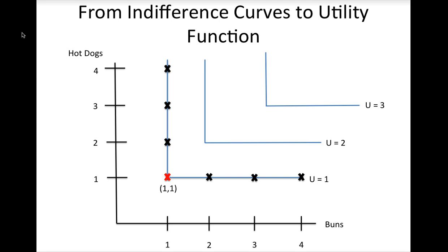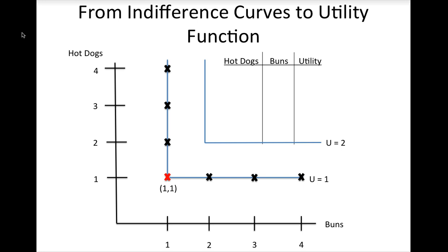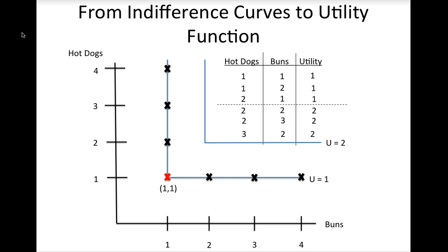For this example, we will focus on 2 indifference curves to identify the pattern. For indifference curves of this type, it is helpful to make a table tracking different combinations of hot dogs and buns and the utility from each bundle. If the consumer consumes 1 hot dog and 1 bun, his utility is 1. His utility is also 1 if he consumes 1 hot dog and 2 buns, or 2 hot dogs and 1 bun. If the consumer consumes 2 hot dogs and 2 buns, his utility is 2. If he consumes 2 hot dogs and 3 buns, or 3 hot dogs and 2 buns, his utility is still 2. The utility is always the smaller of the number of hot dogs and the number of buns.